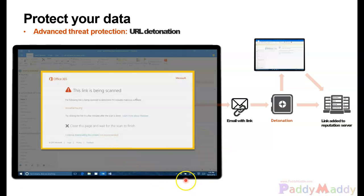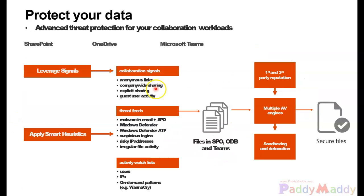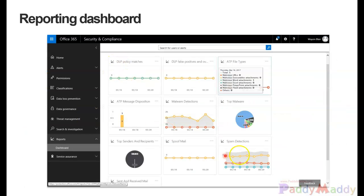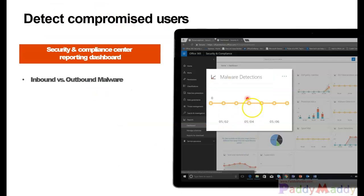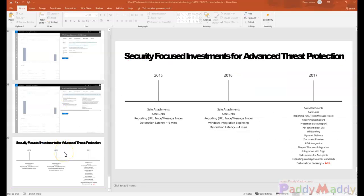Advanced ATP protection with URL configuration, as shown in the admin portal, can protect your data, leverage signals, and apply smart heuristics like malware detection in email. This is then checked within sandboxing and detonation. The reporting dashboard covers ATP-side malware detections and spoof emails — email-integrated malware, inbound and outbound data. It's not just brute force or DDoS attacks; Azure Advanced Threat Protection automatically monitors many things. It's a great product that bubbles up security recommendations and machine learning analytics from several products altogether.